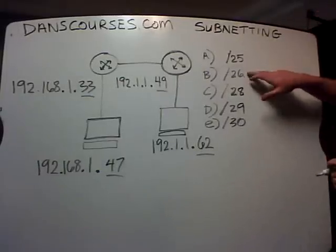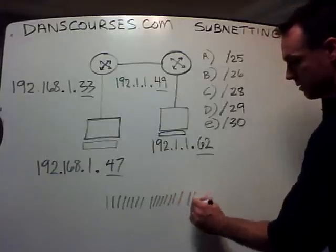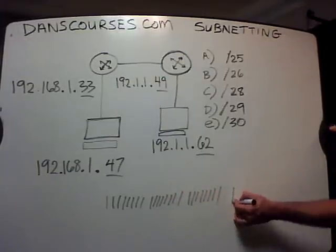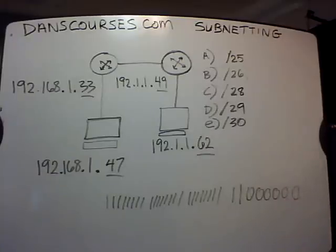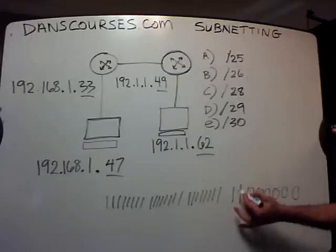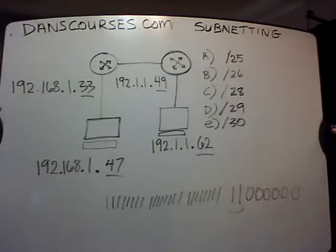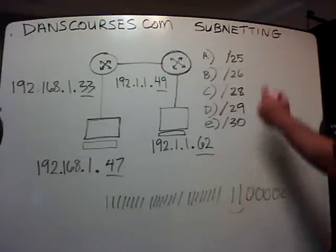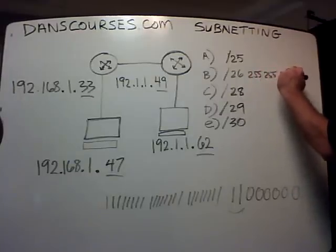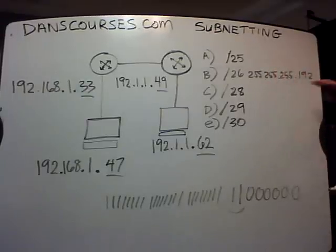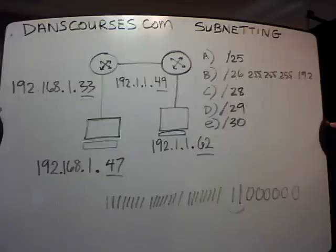A slash 26 is 26 ones — that's 24 ones, then a 25th, 26th, and then six zeros. We have to find the magic number, which is in the last octet — it's the last one, the last borrowed bits. We call these the two borrowed bits. Otherwise, it would have been a normal 24-bit subnet mask. Slash 26 would be 255.255.255.192. That is not a classful subnet mask — the 192 is not normal; it should have been zero, but it's been changed to 192. Hence, it's been subnetted.